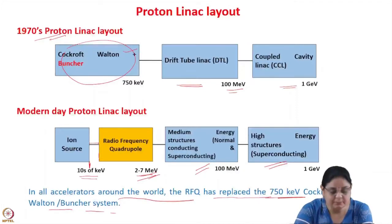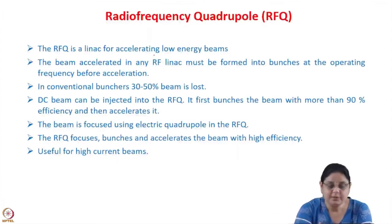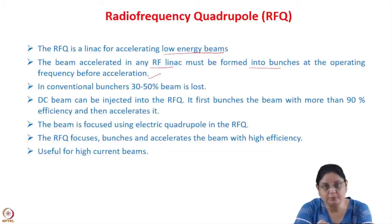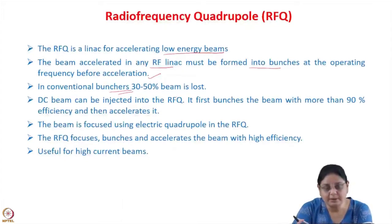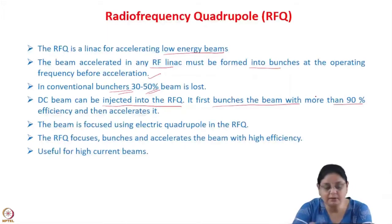The RFQ can directly take in the beam from the ion source, bunch the beam, and then accelerate it. So the need for the buncher which was there earlier is eliminated. The RFQ is a linac for accelerating low energy beams. The beam accelerated in any RF linac must be formed into bunches at the operating frequency before acceleration. In conventional bunchers, which is simply a cavity followed by a drift space, 30 to 50 percent of the beam is lost. A DC beam can be injected directly into the RFQ.